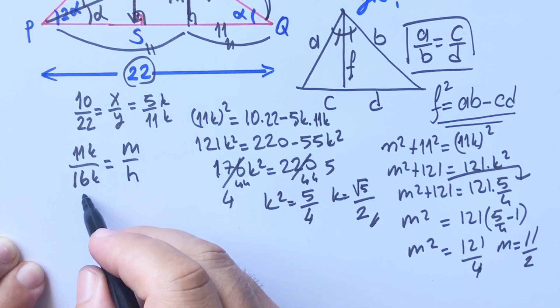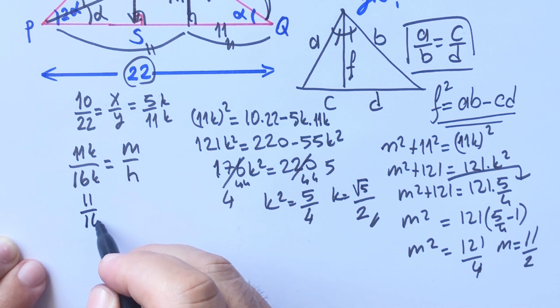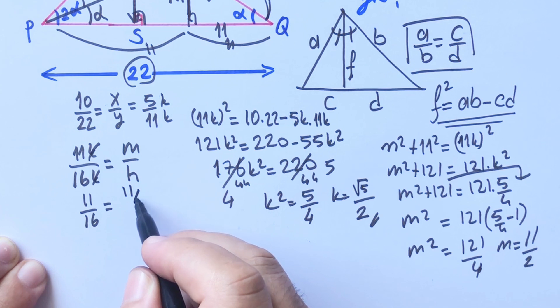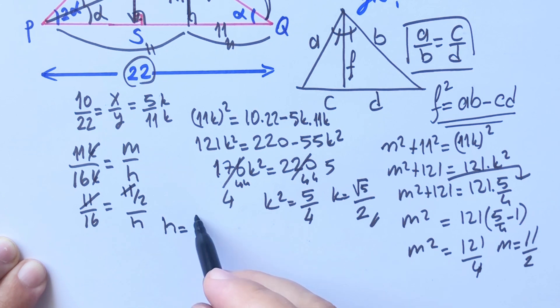We already found M, so if we simplify the equation, H is going to be 8.